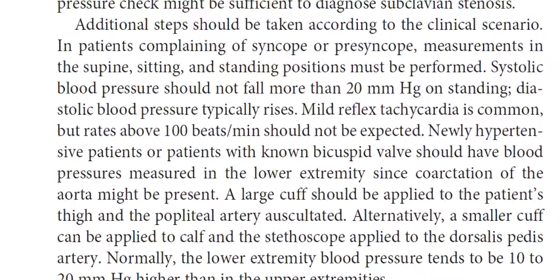Additional steps should be taken according to the clinical scenario. In patients complaining of syncope or presyncope, measurements in the supine, sitting, and standing positions must be performed. Systolic blood pressure should not fall more than 20 mmHg on standing, while diastolic blood pressure typically rises. Mild reflex tachycardia is common, but rates above 100 beats per minute should not be expected. Newly hypertensive patients or patients with a non-bicuspid aortic valve should have blood pressure measured in the lower extremities, since coarctation of the aorta might be present. A large cuff should be applied to the patient's thigh and the popliteal artery auscultated.